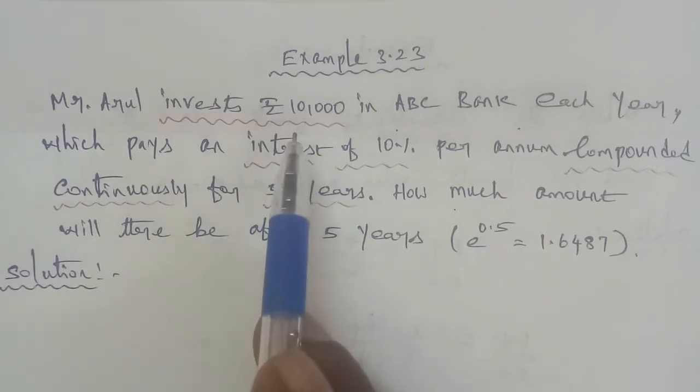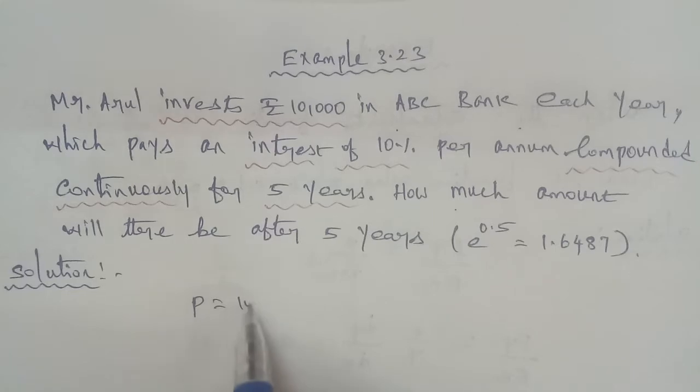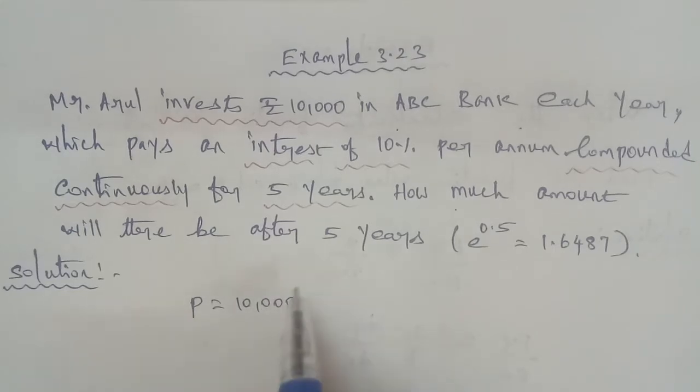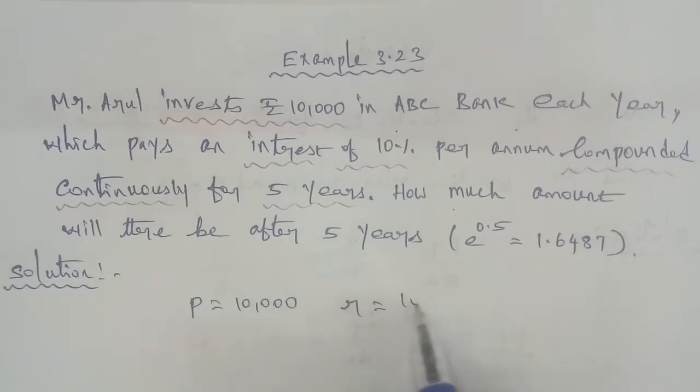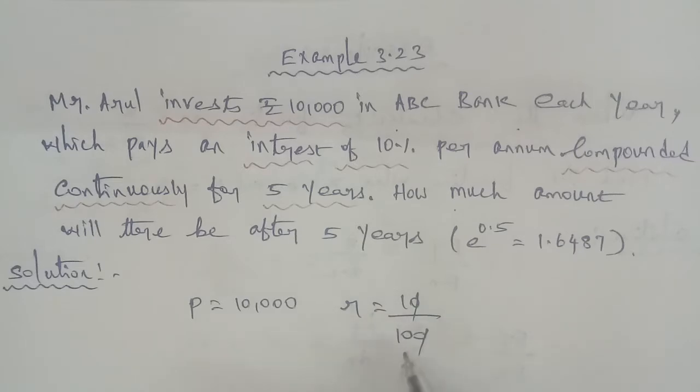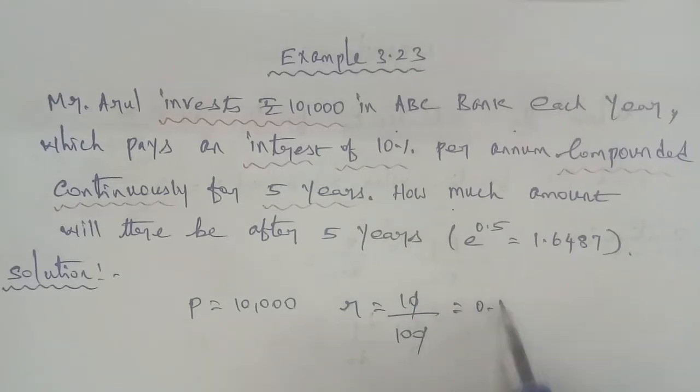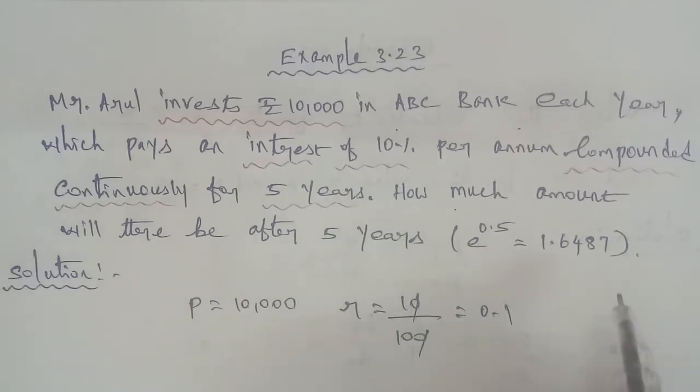Given information: P is equal to 10,000, and the rate of interest is 10%, that is R equals 10 by 100, which equals 0.1, and the number of years is 5, that is n equals 5.